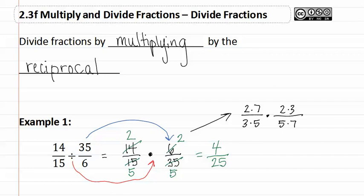And then, we would reduce out any common factors. I see that there is a three in the numerator and the denominator, and a seven in the numerator and the denominator, which gets me to four over twenty-five. As you can see, we got the same answer both times.